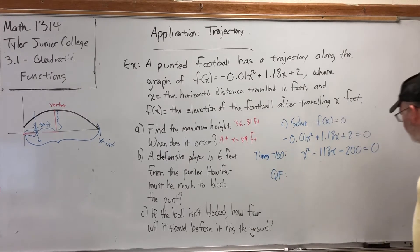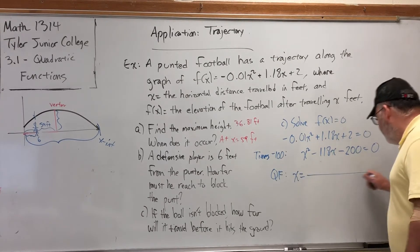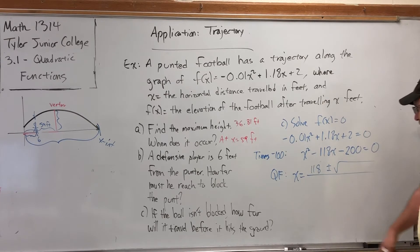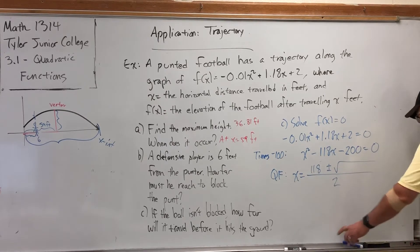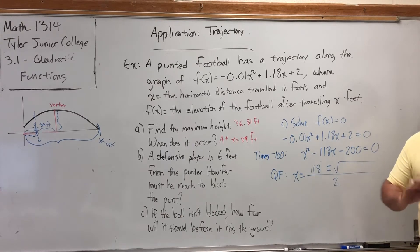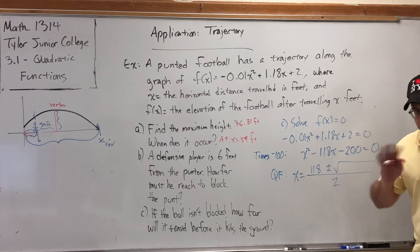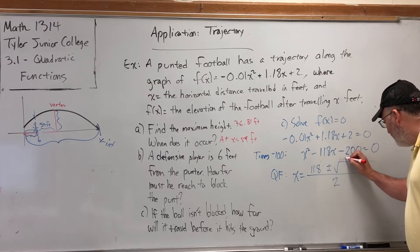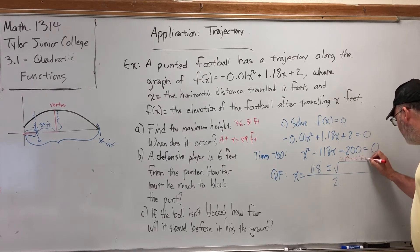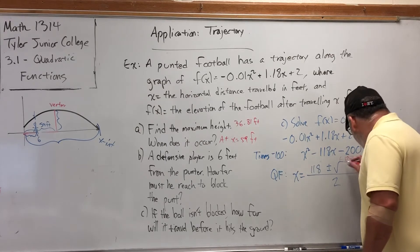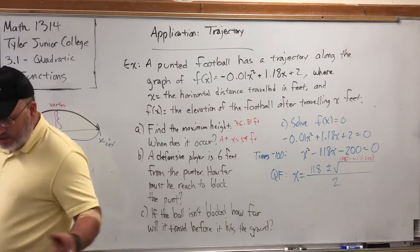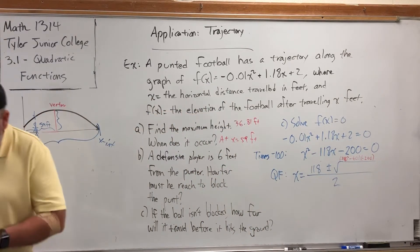I'm tempted to try to factor this. But let's go ahead and get out the quadratic formula because I don't think it will factor. x = -b, so 118. Plus or minus the square root of, we'll come back to that in a second. Two times a. If you do enough quadratic formulas, you start realizing that you can set up the discriminant of the part under the square root above it and then write its answer under the square root. For example, here I would set up -118² - 4(1)(-200).